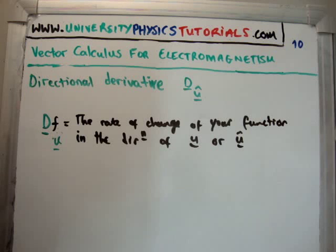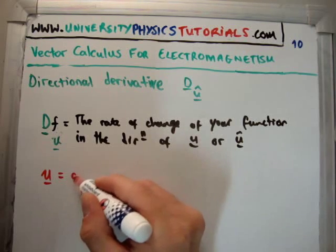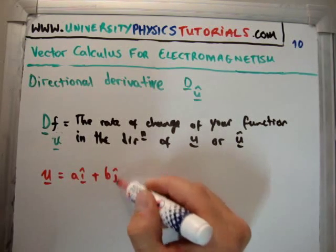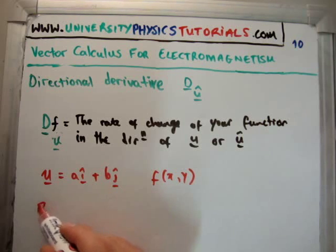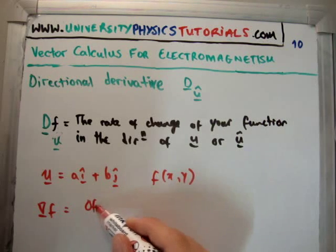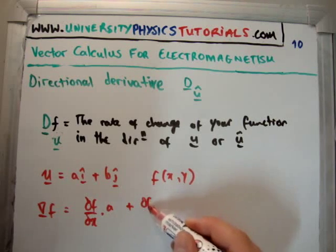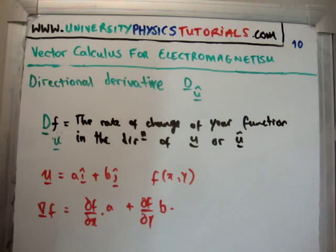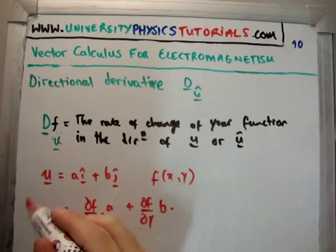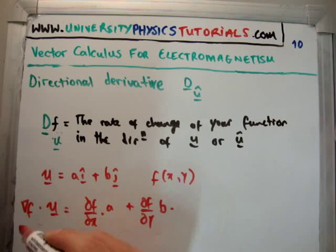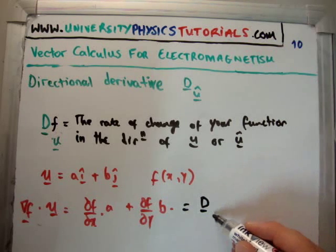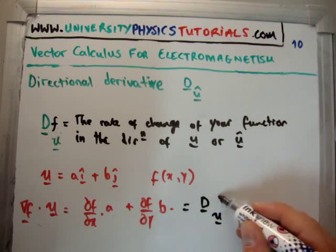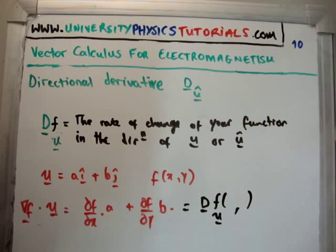How do we compute this? It's simply a dot product. Let U be the vector aî + bĵ, and let f be a function of x and y. The gradient of f dotted with U gives: (∂f/∂x)·a + (∂f/∂y)·b. That is the directional derivative in the direction of vector U of our function f, though we still need to evaluate it at a particular point.